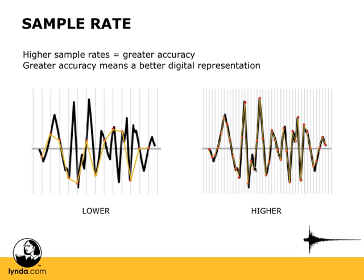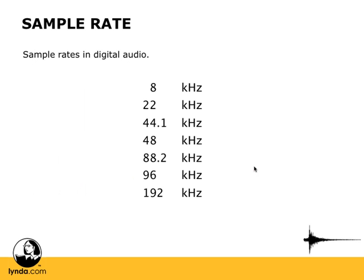As you would expect, the higher the sample rate, the more accurate the reproduction of the sound — which in a way means better sound. The higher the sample rate, the more accurate the analog-to-digital conversion will be. Here are a lot of the sample rates you'll come into contact with in digital audio.